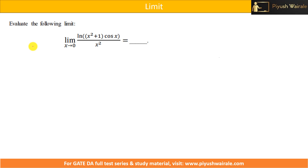Hello everyone. In this video we are going to discuss question number 60 of the GATE DA 2024 exam. This question is based on limits — evaluate the following limit: limit as x tends to 0 of ln(x² + 1)·cos(x) divided by x².